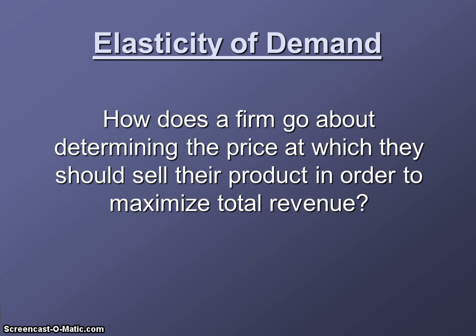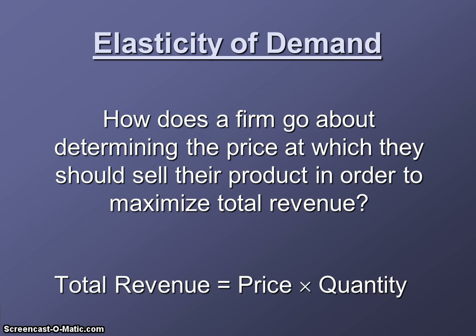A firm's goal is to maximize total revenue. Total revenue is the price of the product they're selling multiplied by the quantity of sales. If you run a business, you want to sell as much as you can and get a good price for that product, so your goal is to have a high total revenue. Total revenue does not take cost of production into account, so total revenue is different than profit. Profit is a more important number we'll focus on later, but for now we're just going to look at total revenue.